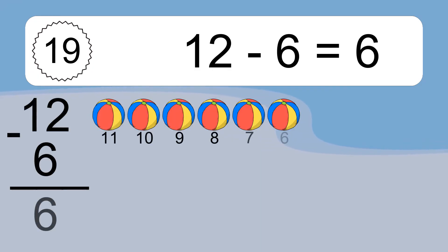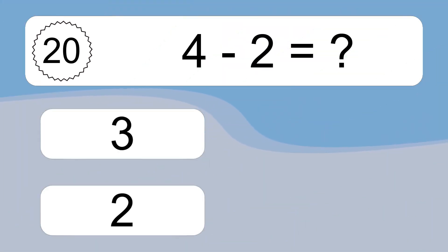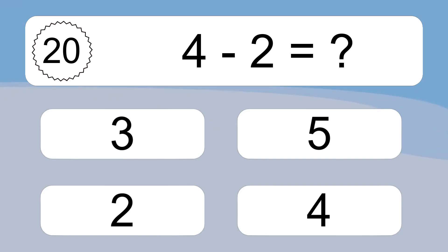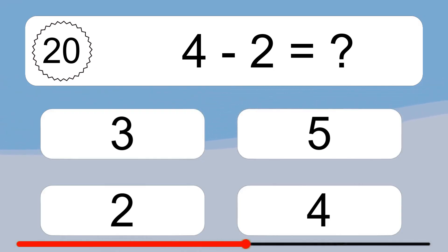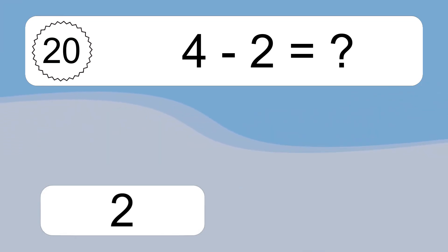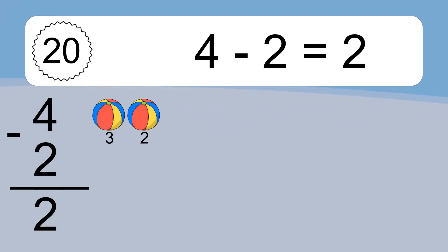12 minus 6 equals what? 12 minus 6 equals 6. Let's count it. 11, 10, 9, 8, 7, 6. 4 minus 2 equals what? 4 minus 2 equals 2. Let's count it. 3, 2.